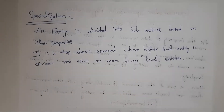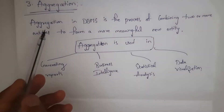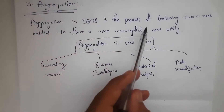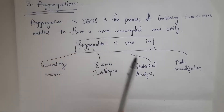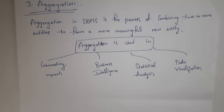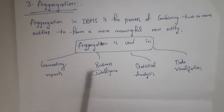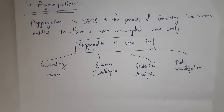This is specialization. The last concept is aggregation. Aggregation in DBMS is the process of combining two or more entities to form a more meaningful new entity. In aggregation, we combine two entities to form a single entity. Aggregation is used in generalizing reports, business intelligence, statistical analysis, and data visualization. I will give one example so that you can clearly understand what aggregation is.